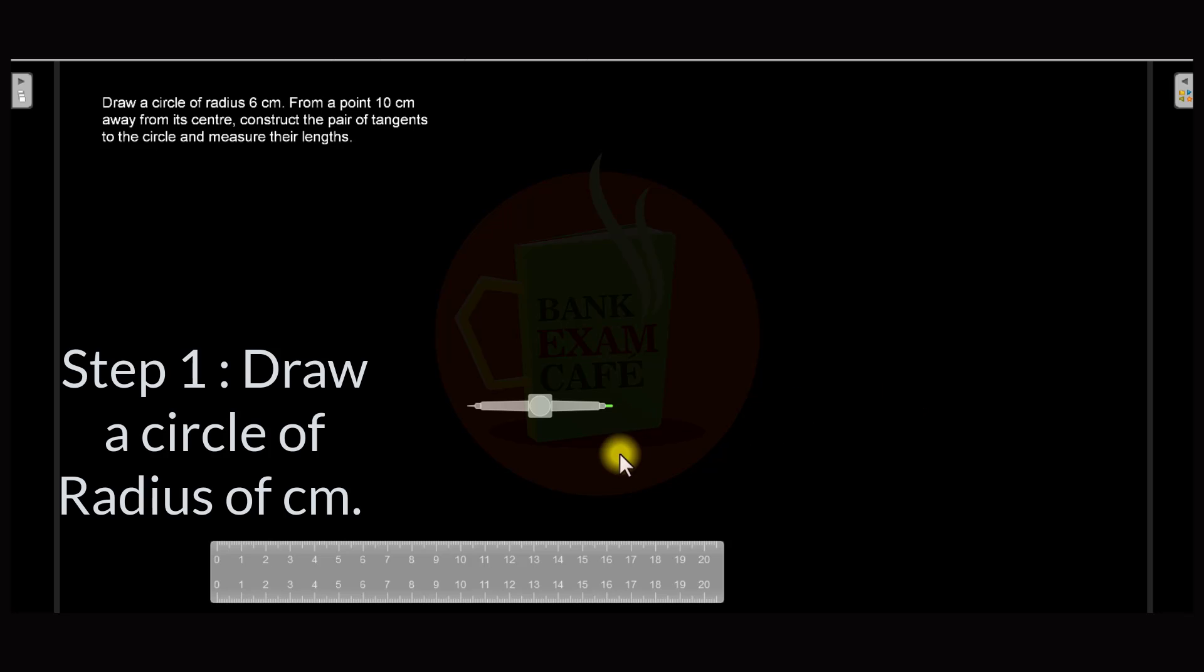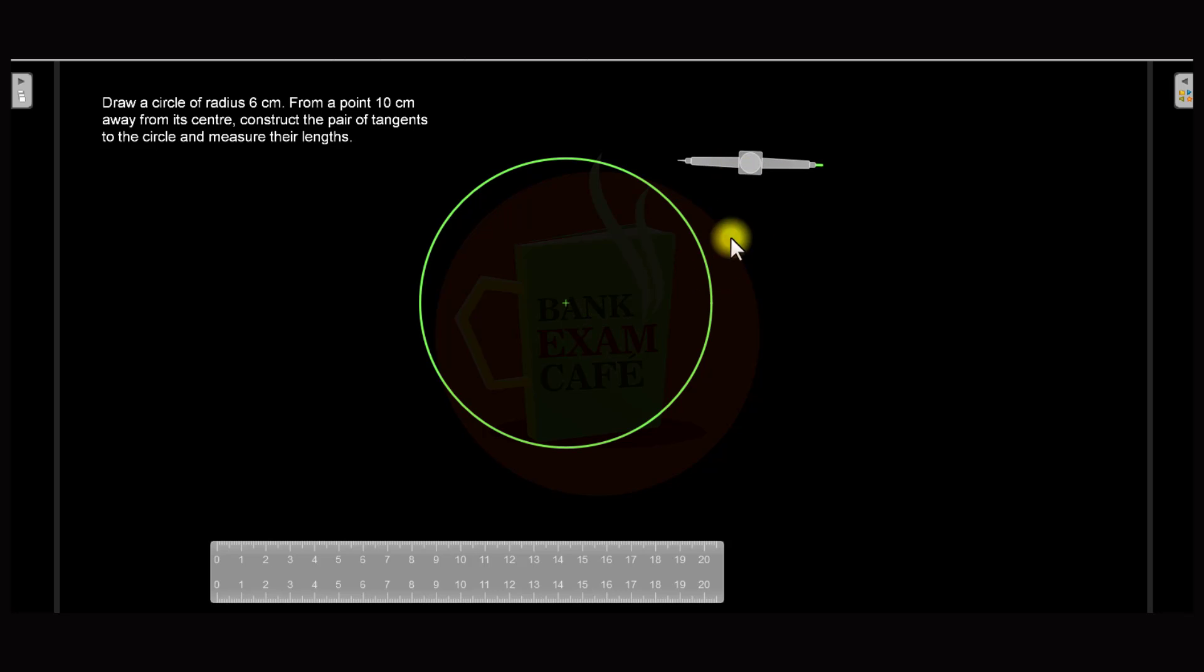So here the first step is to draw a circle of radius 6 cm. This is the distance taken as 6 cm. And so I first draw a circle as per the first step. So this is the circle of radius 6 cm, and let the origin of this circle be O.